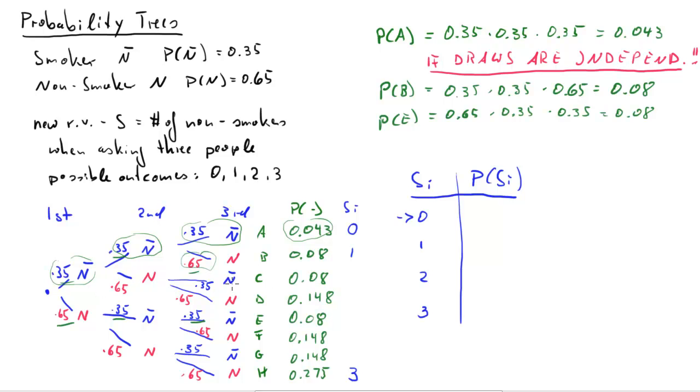Everything in between, you can count the number of red n's in each branch. It will give you a different number of non-smokers. So here, one non-smoker for branches B, C and E and two non-smokers for D, F and G.